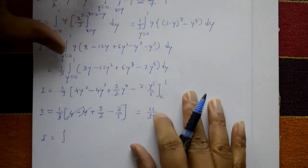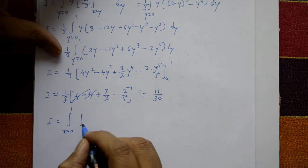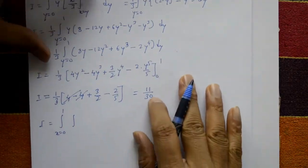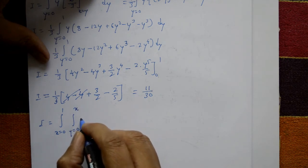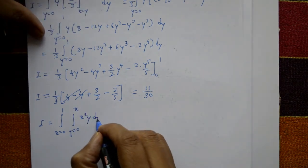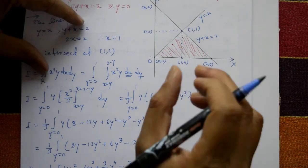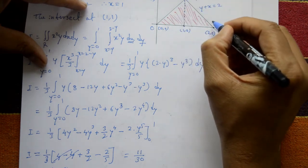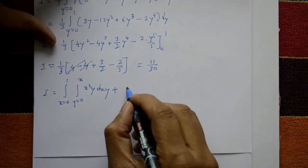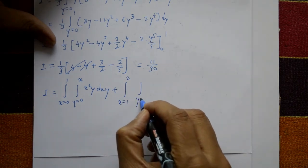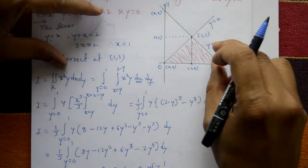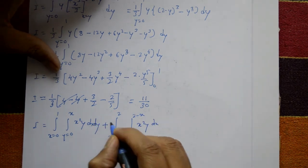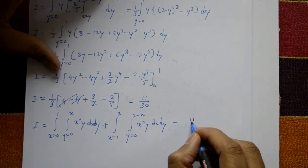For x from 0 to 1: y goes from bottom y equals 0 to top y equals x. For x from 1 to 2: y goes from 0 to the curve y equals 2 minus x. The function is x squared y. Evaluating both parts again gives the same result: 11/30.